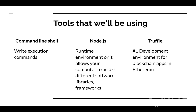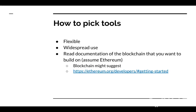In our case we're using the command line to write commands, and we're also using Node.js which is a runtime environment — it allows your computer to access different software libraries and frameworks. That npm command we used earlier is Node.js downloading Truffle for us. Instead of doing a bunch of complicated steps, we can just write one command. We're also using Truffle, which is the number one development environment for blockchain apps and Ethereum.